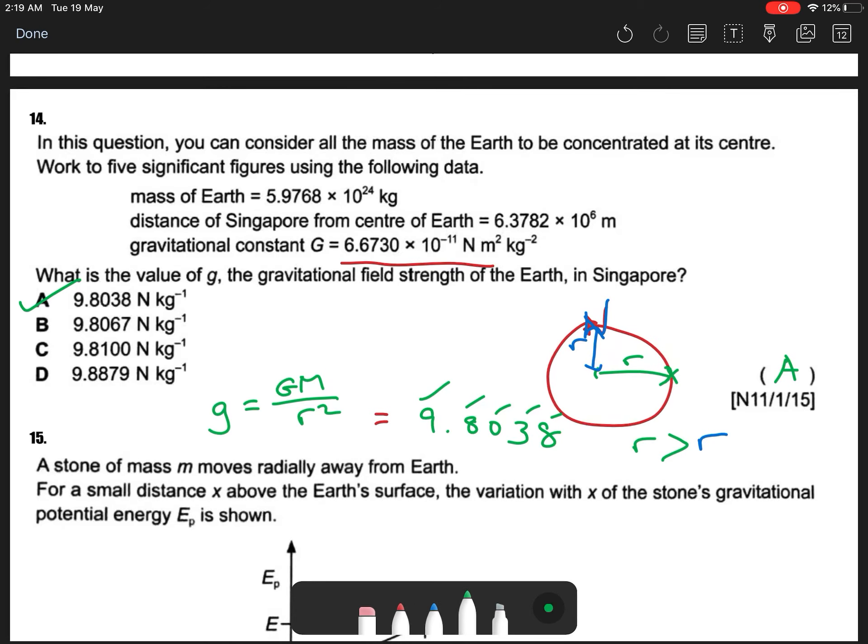Okay, so I know, g equals GM divided by r squared. So if my r is smaller, so my g field at the north pole will be bigger. Okay, so it will be bigger.